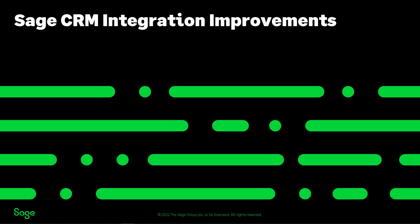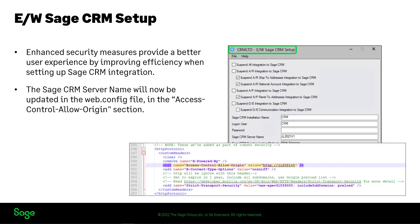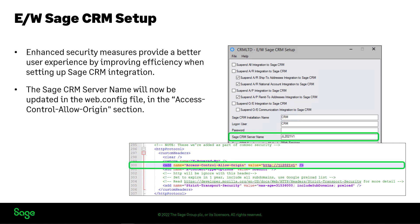Now let's review the Sage CRM integration improvements. There are now changes to access control for Sage 300 2023 when using Sage CRM integration. These new enhanced security measures provide a better user experience by improving efficiency when setting up the integration with Sage CRM. On the EW Sage CRM Setup screen, when a user saves the Sage CRM server name, the access control allow origin section will be updated in the web.config file. By default, Sage 300 will no longer set the access control allow origin section in the web.config file to asterisk.